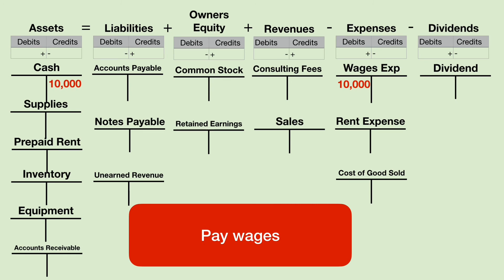Pay the wages. Start with the cash account — do we debit or credit cash? Every time we pay cash, we subtract, and we subtract with a credit. So if we know that we credit cash, then we can feel comfortable knowing that we must debit the wages expense account. Sometimes students start analyzing this with the wages expense account and their mind goes blank. If that happens, just move over to cash. It's easier to nail down if you're supposed to debit or credit cash, and then the other account would be the opposite.